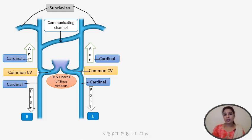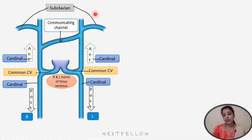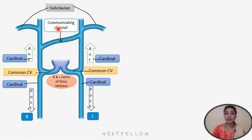The cardinal venous system — anterior cardinal, posterior cardinal, and common cardinal veins — which drain the head and body of the embryo, begins functioning during late third and early fourth weeks of gestation. The major veins of the upper part of the body are the internal jugular vein, subclavian veins, right and left brachiocephalic veins, and the superior vena cava, all of which are discussed in this session.